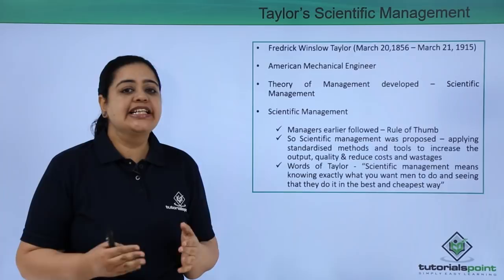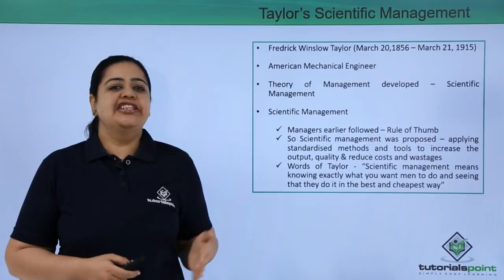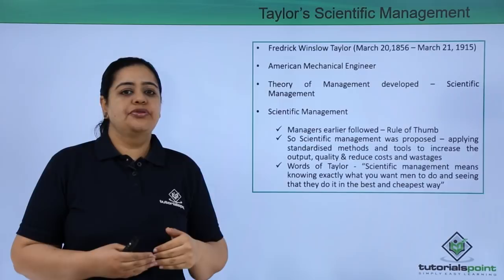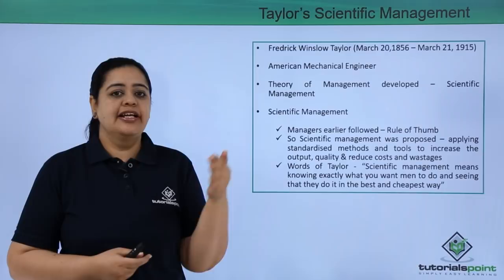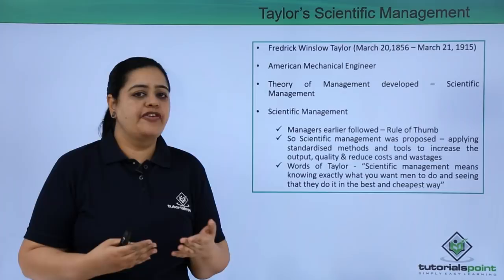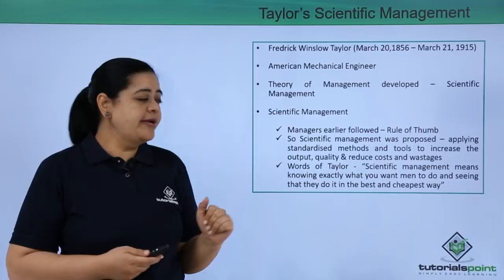Now, what is this scientific management all about? Earlier, when the industrialization process started, managers weren't aware of what exactly they should do when a problem came in. So, what they used to do was always follow their intuition — if they had a similar kind of problem in the past, they dealt with it the same way, or maybe they took advice from a fellow manager. So, there were no set rules and managers used to solve situations based on personal experiences. This is known as rule of thumb.